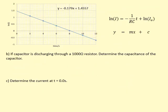I've taken that data and used Excel to plot a line here with ln(I) against time. You can see I'm getting a straight line with a gradient of -0.179 and a y-intercept of 1.4557.